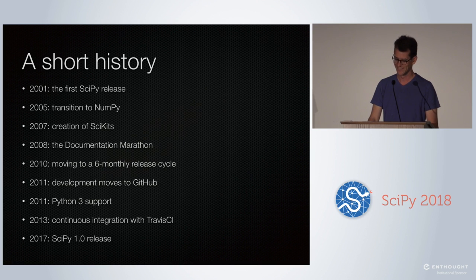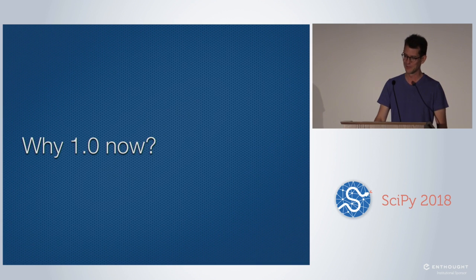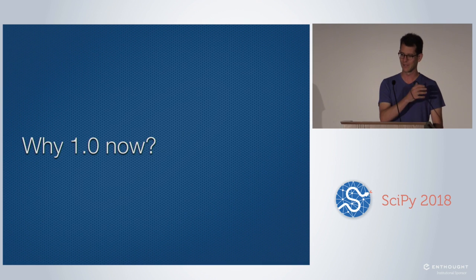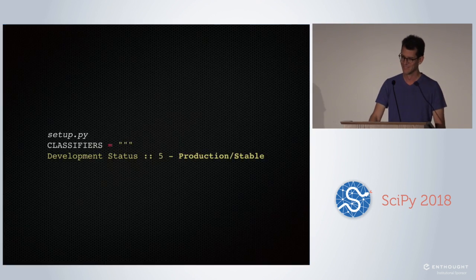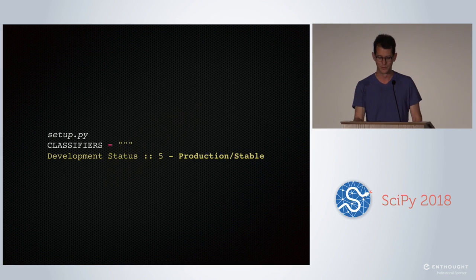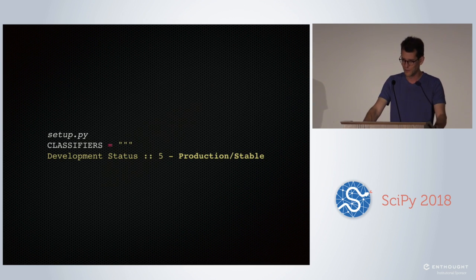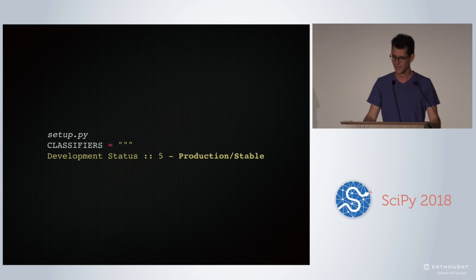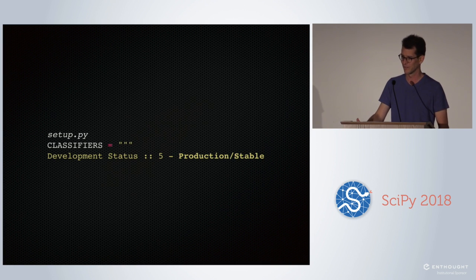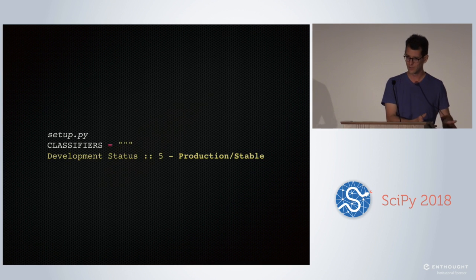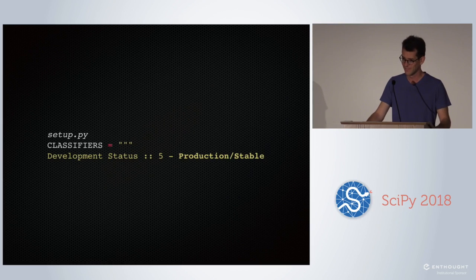Why did it take so long? 16 years is a long time, especially in computing. To get to 1.0, that's when you have the impression that something is stable, something is used in production. But I think it was stable long before that. In pretty much every industry, there are mission-critical products built on top of SciPy — NASA missions, the machines with which Intel prints its computer chips, hedge funds prototyping their algorithms, Apple shipping it as part of Mac OS. It's been stable for a while despite being called 0.x.